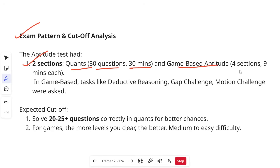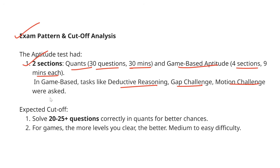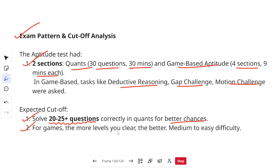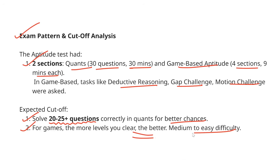In game-based aptitude, you will have four sections with nine minutes each. Questions include deductive reasoning, gap challenge, and motion challenge. If you are not sure where to prepare, check the Cognizant prep playlist on my channel — you will find all the actual questions that were asked in the assessment. The expected cutoff for the aptitude test is 20 to 25 or more questions correct in the quant section for better chances at a higher role. There are three different roles: Gen C, Gen C Next, and Gen C Pro. For the gamified section, the more levels you clear the better — the difficulty of this assessment was medium to easy.